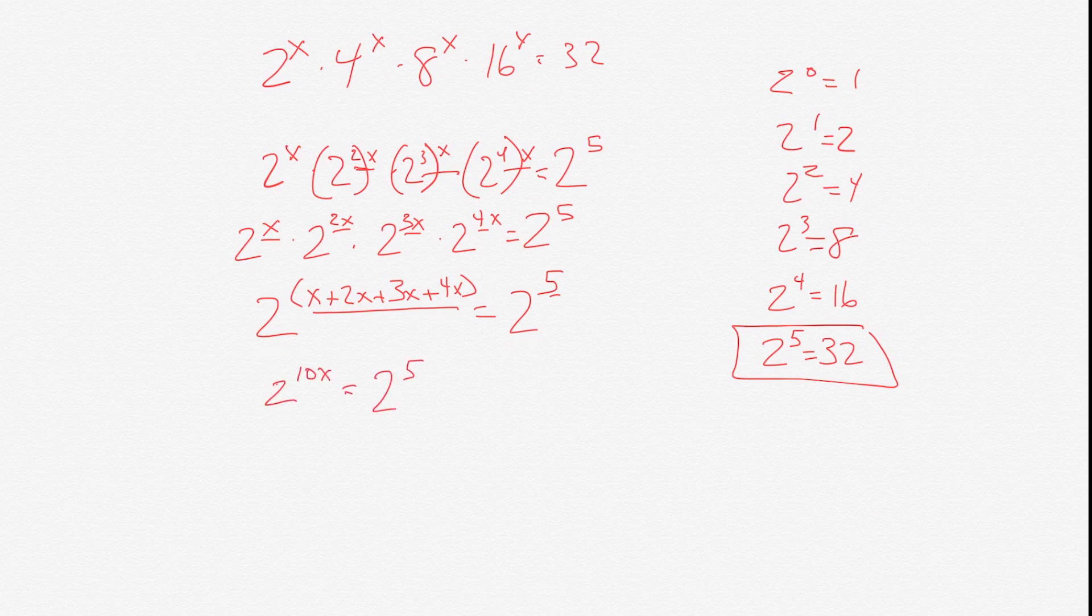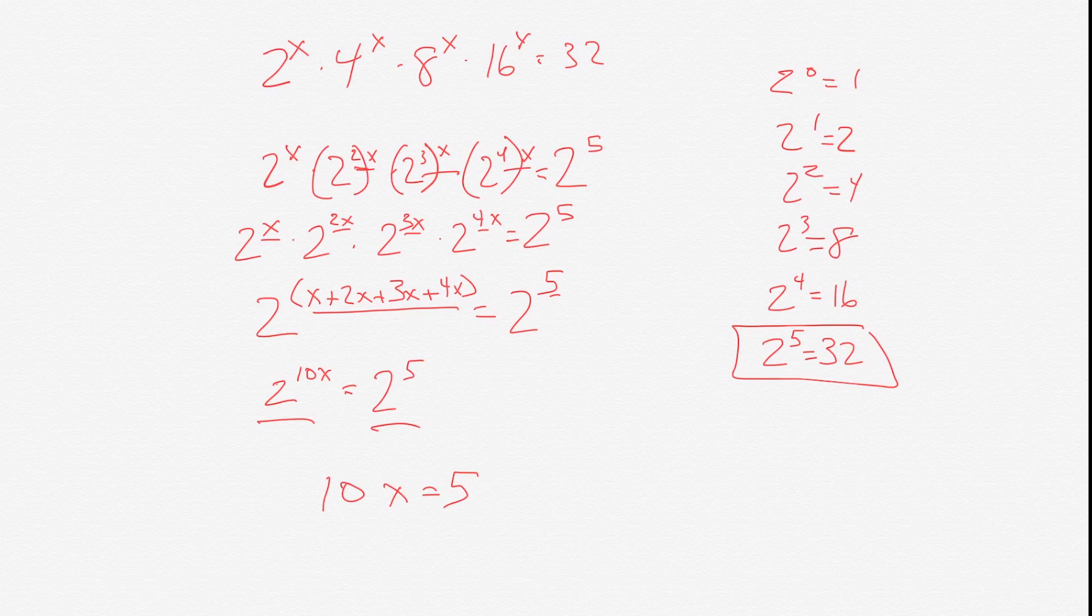And 2 to the 10x equals 2 to the 5th. Now whenever we have an equation where the base is the same on both sides, then we could set the exponentials equal to each other. So we could just set 10x equals 5, because the base of 2 was the same on both sides of the equation.